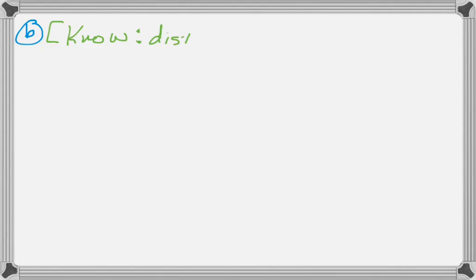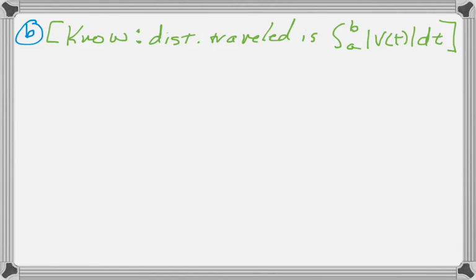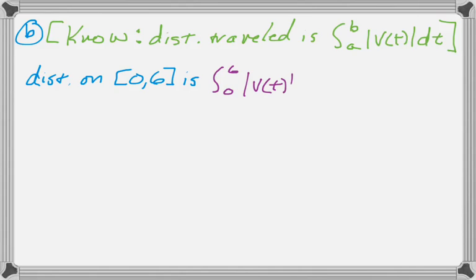The next part is to write but not evaluate an integral that gives the total distance traveled. You have to know how to find total distance: distance traveled is the integral from a to b of the absolute value of velocity. So distance traveled on 0 to 6 is the integral from 0 to 6 of |v(t)| dt. You don't even need to write down what v(t) is, because that would be the answer no matter what v(t) was.